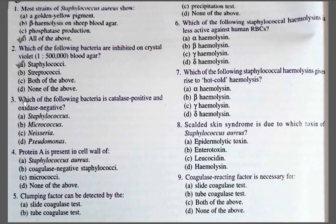Question number three: Which of the following bacteria is catalase positive and oxidase negative? Options: A. Staphylococci, B. Micrococci, C. Neisseria, D. Pseudomonas. The correct one is Option A, Staphylococci — it is catalase positive but oxidase negative.